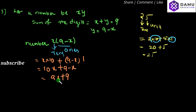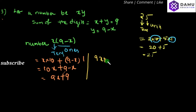So 10x minus x gives us 9x plus 9. This is the expanded form for our number. Next statement: if you subtract 27 from the number, its digits are reversed. So the number is 9x plus 9, and if you subtract 27 from it, the digits will be reversed.